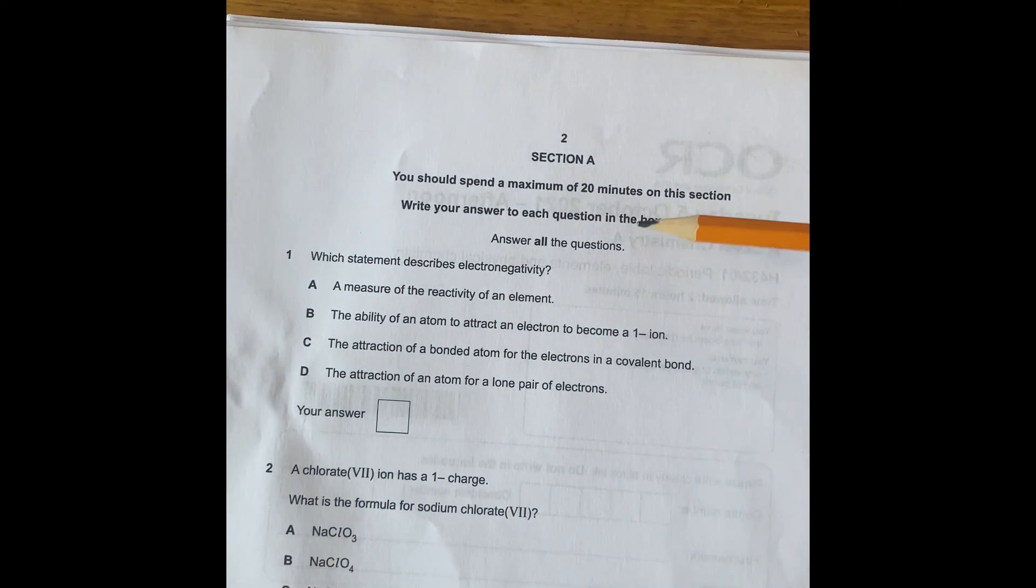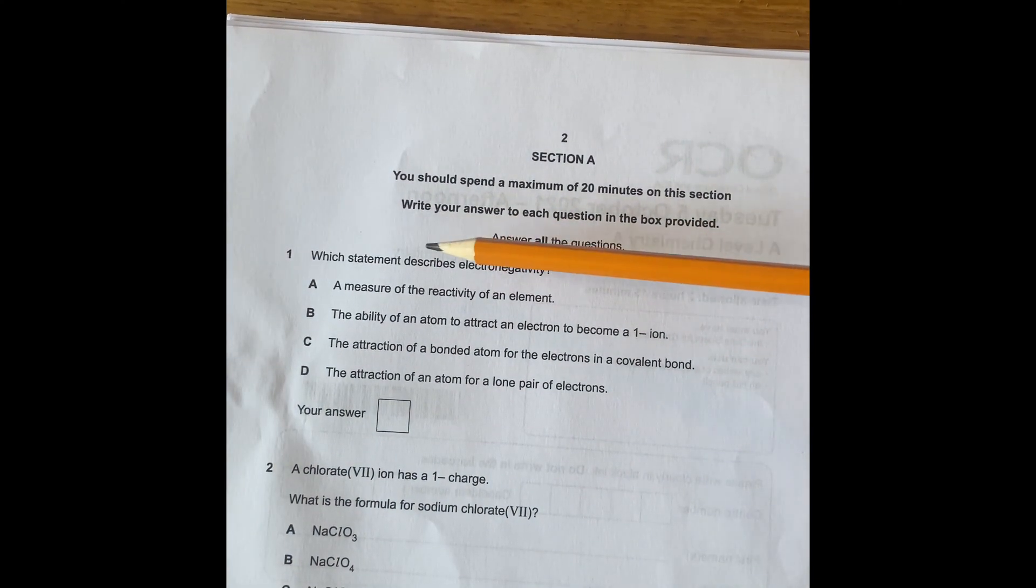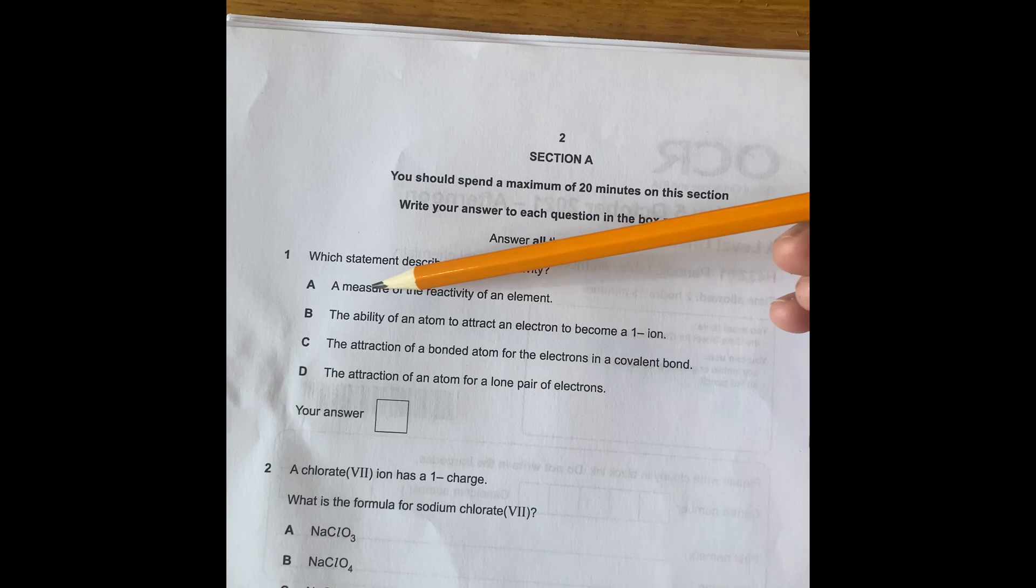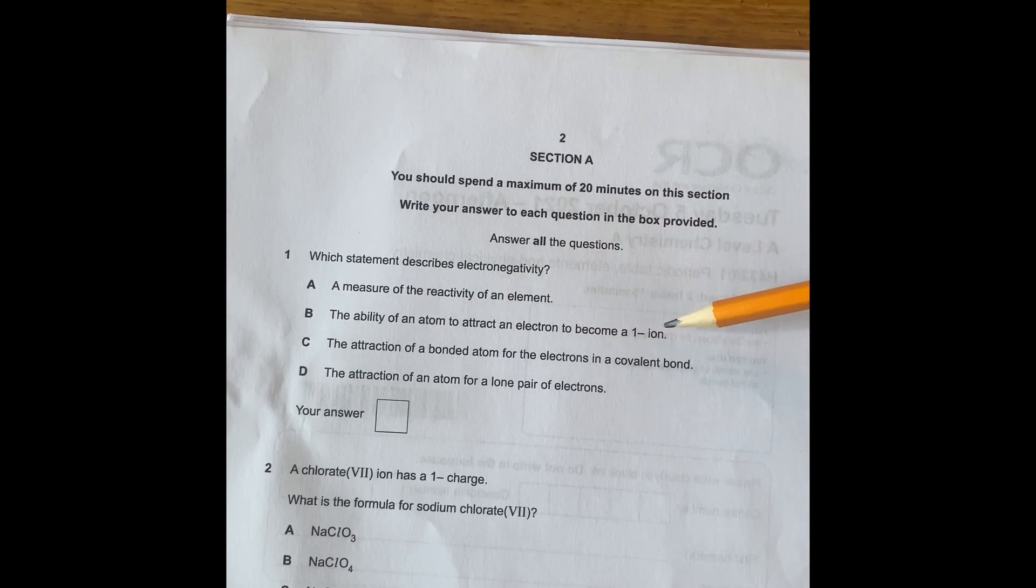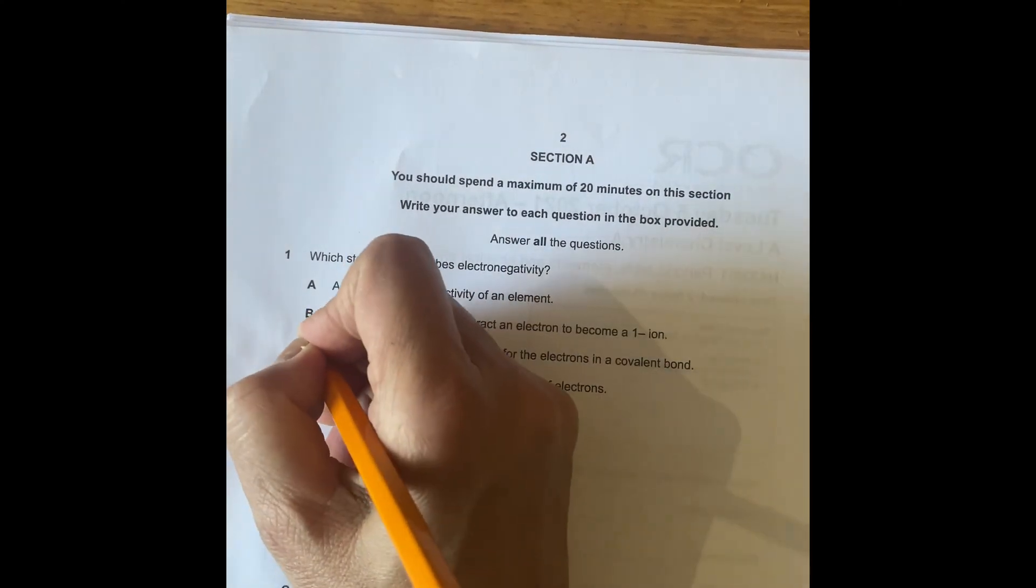So the first thing you ought to do is question number one. Which statement describes electronegativity? You have to know the definition of electronegativity. A measured reactivity of an element, that's incorrect. Ability of an atom to attract electron become minus one, that is incorrect. And then you have attraction of a bonded atom for electrons in a covalent bond, that's the correct one. So C is the correct one.